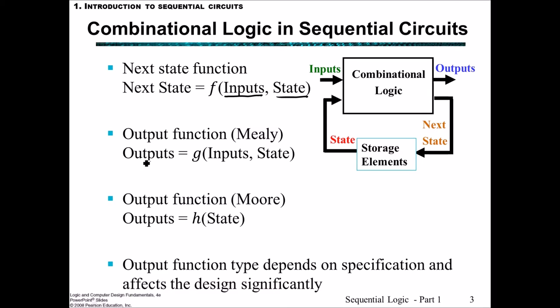We have two state diagram representations used in sequential circuits: Mealy and Moore. In the Mealy case, the outputs are a function of both the inputs and the state, in the same way that the next state is also a function of inputs and state. However, with the Moore case, the output function is only a function of the state — it's irrelevant what the input is. Which output function type we use depends upon the specifications given to us and it does significantly affect the design.